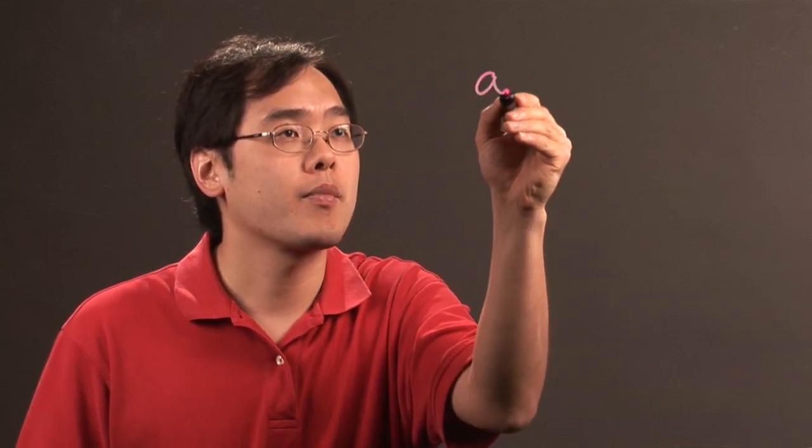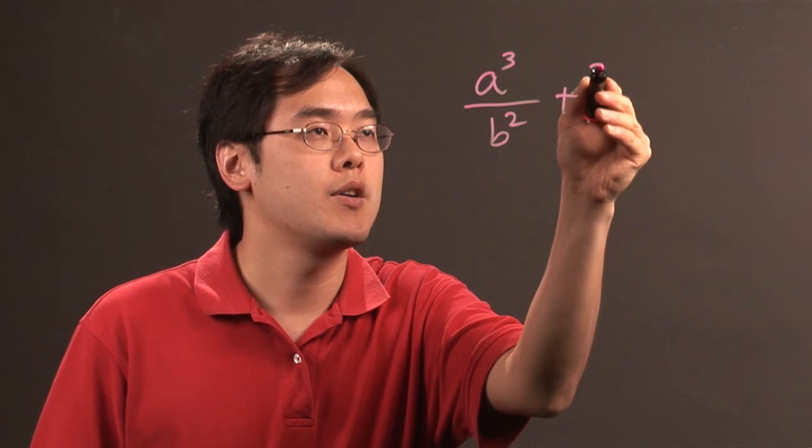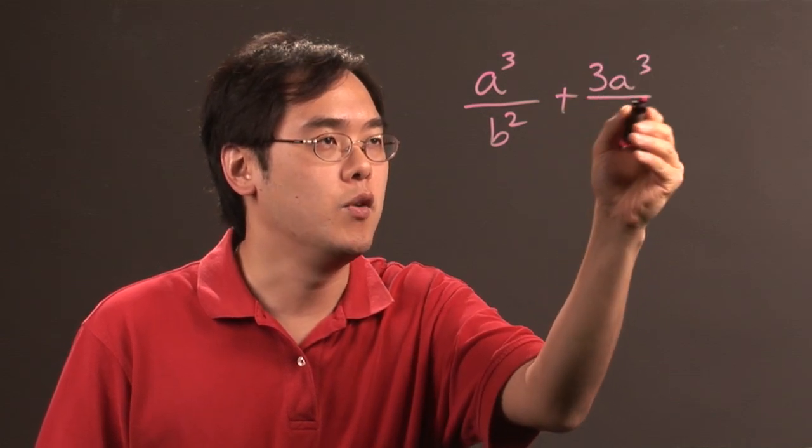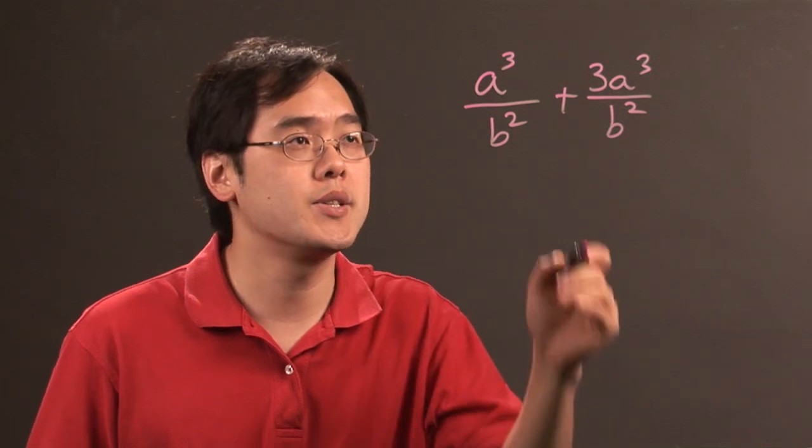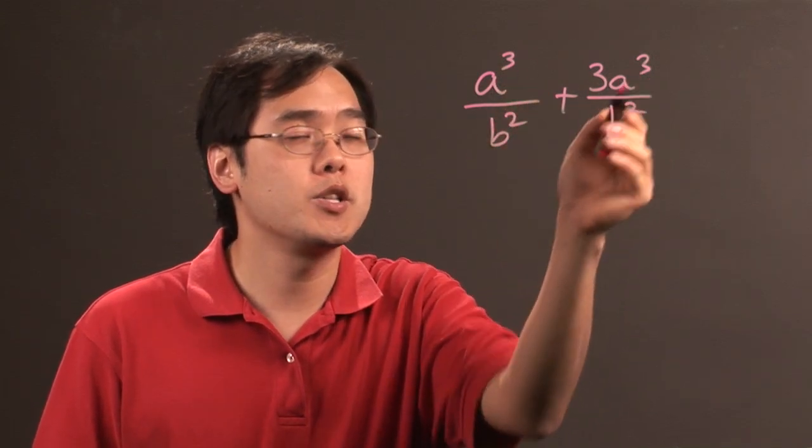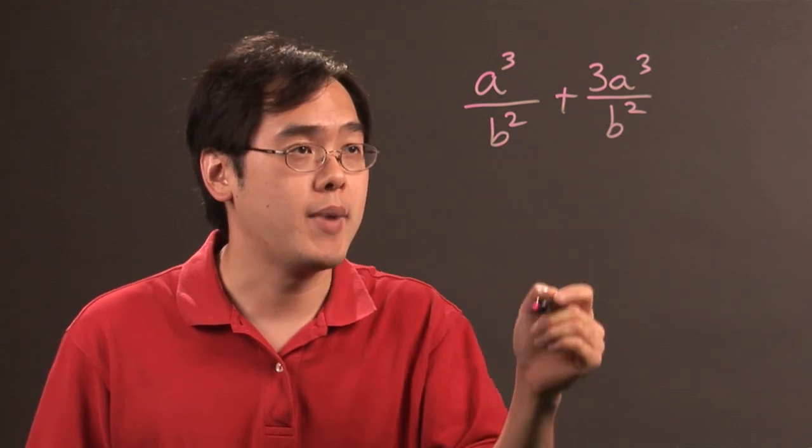So for example, if you have a cubed over b squared plus 3a cubed over b squared, this is one of those situations where things are really straightforward because the bases and the exponents match, which is what you have to be sure about before you can combine anything, and the denominators match.